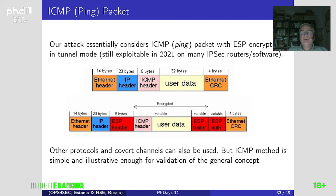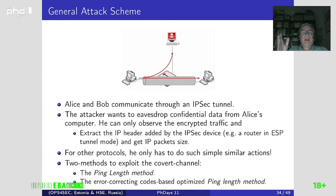The general attack scheme involves two entities exchanging data over an encrypted IPsec tunnel channel. The attacker can only observe and wiretap the channel, but cannot decrypt the data since he does not have the key.